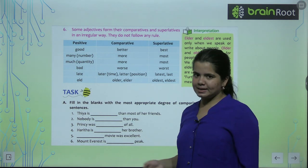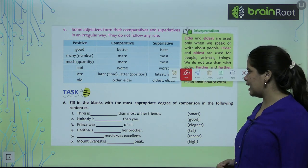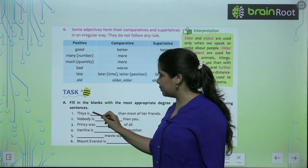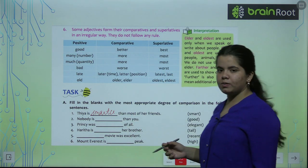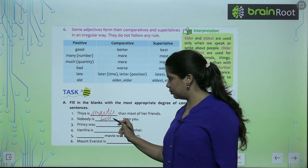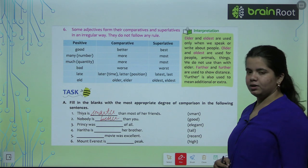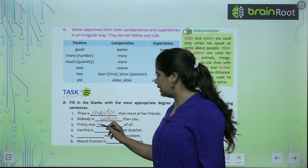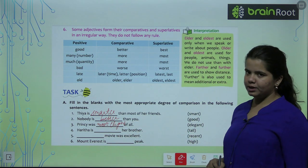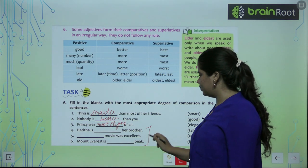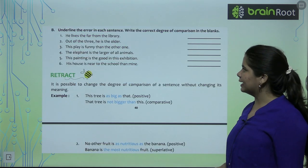Now we have a task where we need to fill in the most appropriate degree of comparison. 'Thia is ___ than most of her friends' — Thia is smarter. 'Nobody is ___ than you' — Nobody is better than you. 'Princey was ___ of all' — Princey was most elegant of all, because with 'elegant' we use most or more. The last three I will give you as homework.